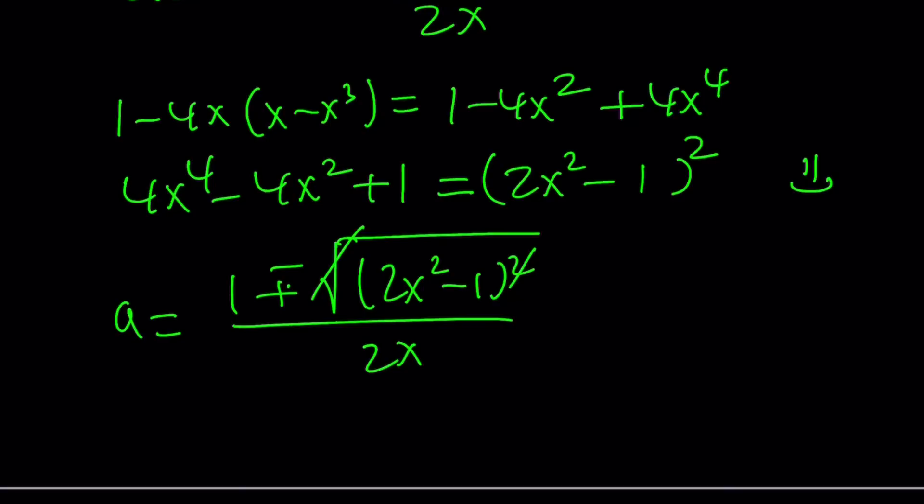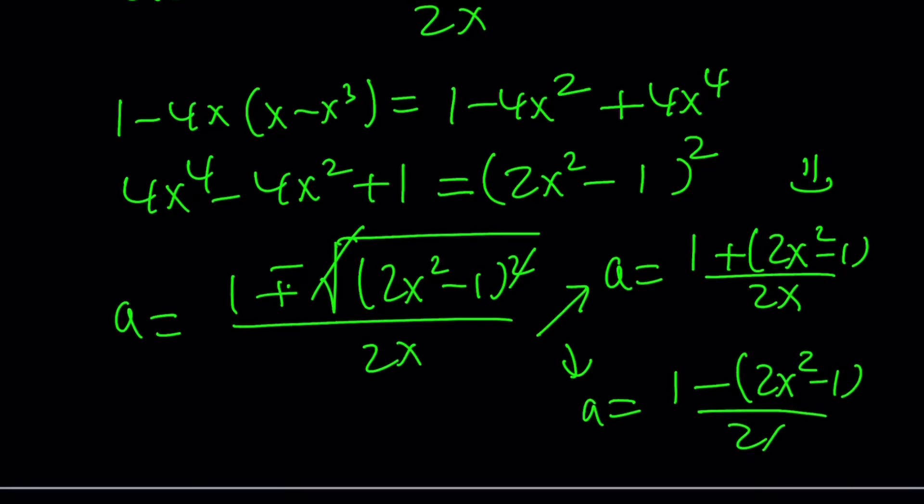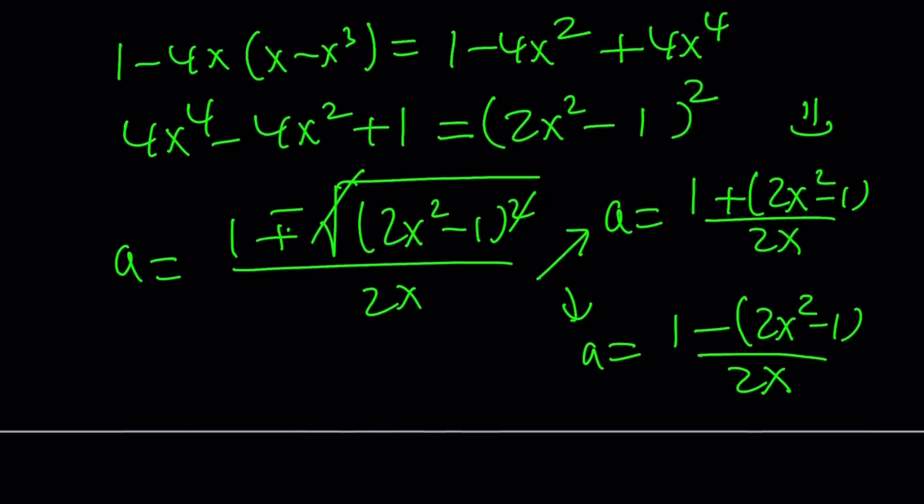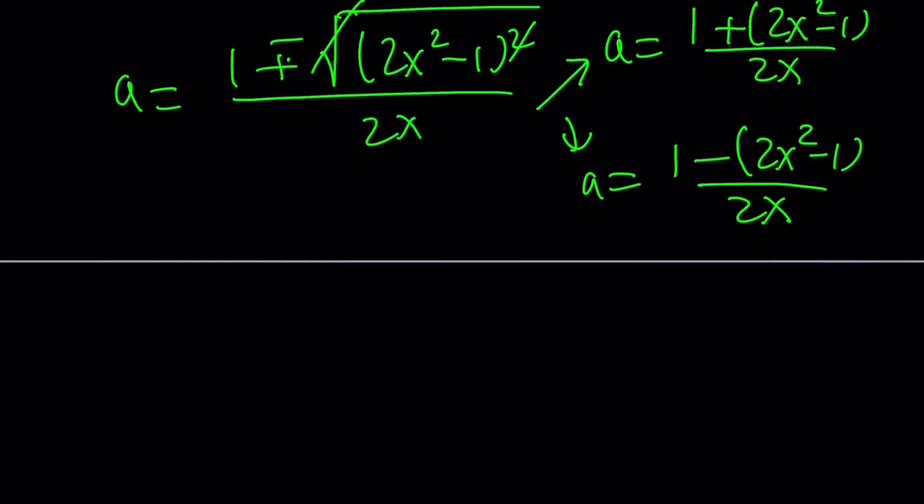So we're going to get two solutions from here. a is going to be (1 plus 2x squared minus 1) over 2x, or a is going to be (1 minus 2x squared minus 1) over 2x. Notice that I'm keeping the 2x squared minus 1 inside the parentheses because it will be negated in the second case. So you want to keep that as an entity.